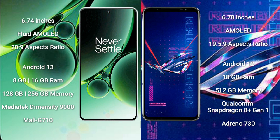OnePlus Nord 3 runs on the Android 13 operating system. Asus ROG Phone 6 Pro runs on the Android 12 operating system. OnePlus Nord 3 comes with 8GB or 16GB RAM and 128GB or 256GB internal storage.